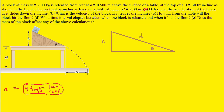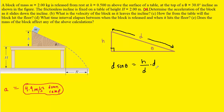Now onto part B, which wants the velocity of the block as it leaves the incline. We've redrawn the incline here. The displacement the block will travel is the length of the ramp, which we call d. We can see that d forms the hypotenuse of a right triangle, and h is the opposite side from the angle theta. So sine of theta equals h divided by d. Solving for d, we get d equals h divided by sine theta.